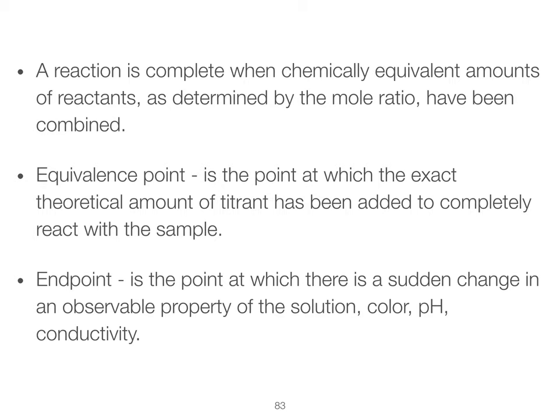We know that the reaction is finished when we have a chemically equivalent amount of each reactant — that's just a way of saying we've added the same number of moles of the two chemicals. Often we use this in acid-base reactions, which means we have a one-to-one ratio. But we can also use it in redox reactions and other types of stoichiometry where we don't always have a one-to-one ratio. The point where we have chemically equivalent amounts — meaning we've reacted everything — we call that the equivalence point.